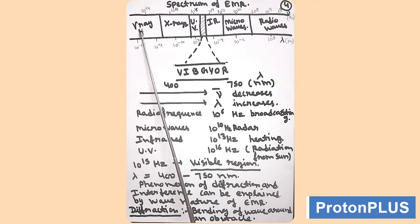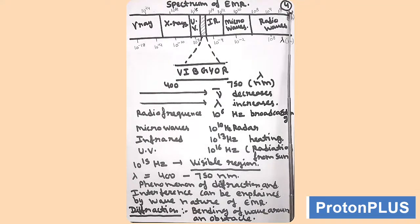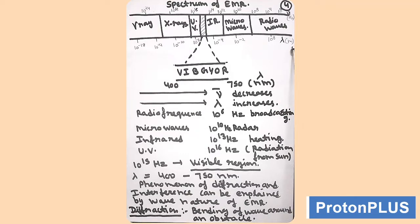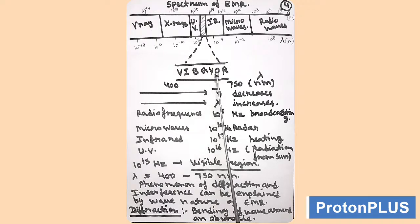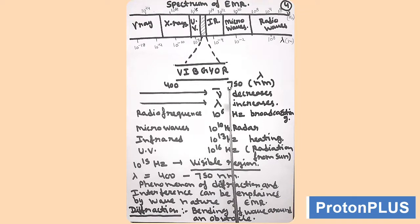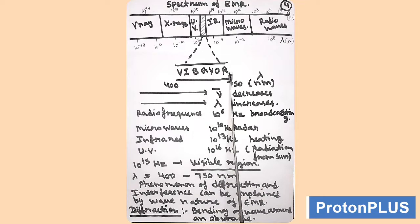If we start from gamma rays to radio waves, frequency decreases from 10²⁴ to 10⁰ hertz, and wavelength increases from 10⁻¹⁸ to 10⁸ meter. If we take the visible zone — VIBGYOR: violet, indigo, blue, green, yellow, orange, and red — this zone is in between 400 to 750 nanometer, or 4000 to 7500 angstrom. In the visible zone, moving from violet to red, frequency decreases and wavelength increases.